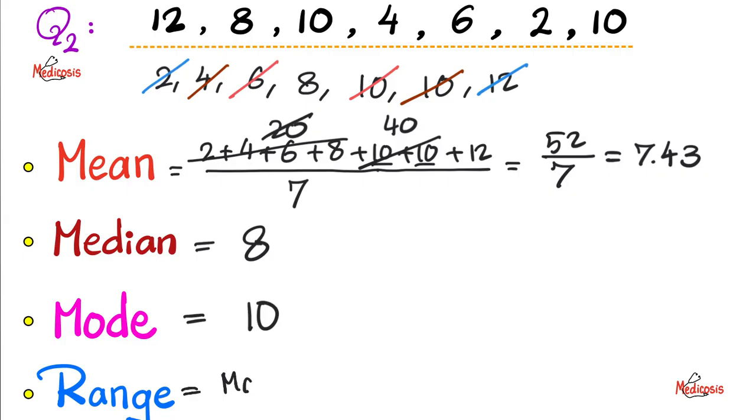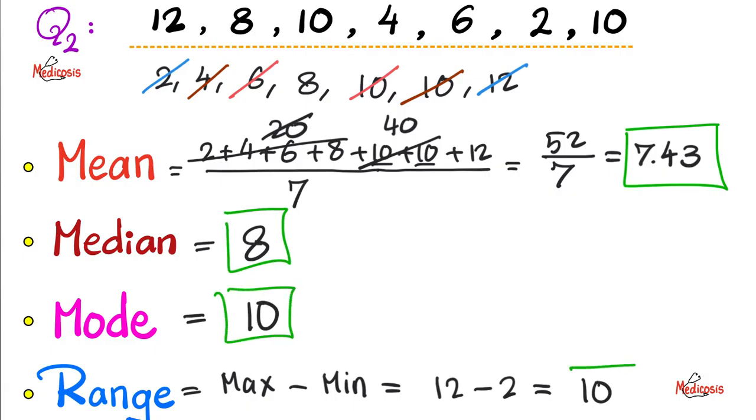Last, we have the range. The range is the maximum value minus the minimum value. The biggest minus the smallest. The biggest number here is 12. And the smallest is 2. So, 12 minus 2 is 10. So, to recap. The mean is 7.43. The median is 8. The mode is 10. And the range is 10.